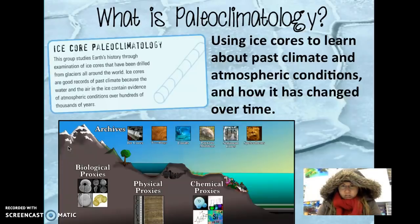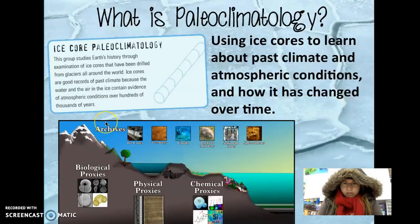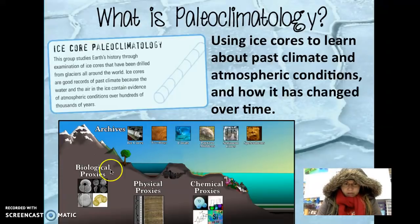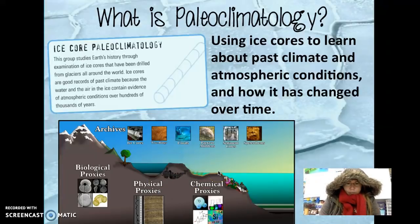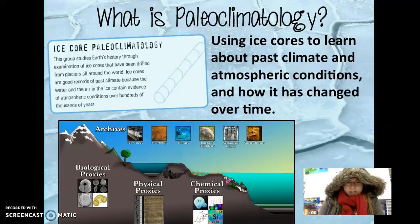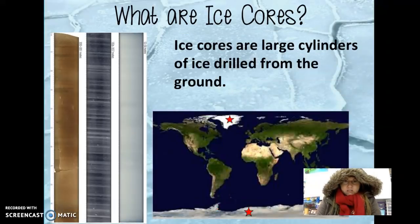As paleoclimatologists, we study ice cores, and that helps us to analyze the climate and atmospheric conditions of the past by looking at biological, physical, and chemical proxies. These proxies help us learn more about ice cores and Earth's history by examining and analyzing specific data sets.